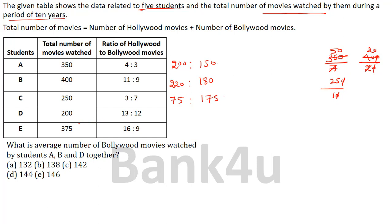For student D, total is 200 and the Hollywood to Bollywood ratio is 13 is to 12. So 13 plus 12 equals 25. 200 divided by 25 equals 8. So Hollywood = 8 into 13. Now 8 into 10 is 80 and 8 into 3 is 24, giving 104. And Bollywood = 8 into 12 = 96. Check: 104 plus 96 equals 200. Correct.